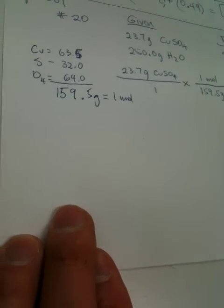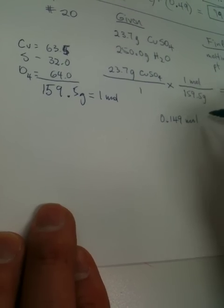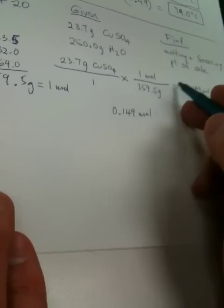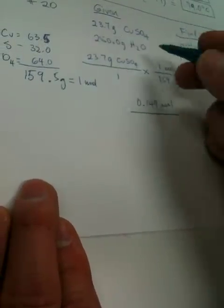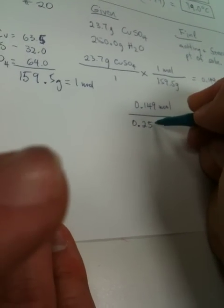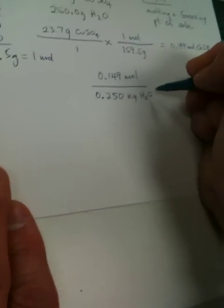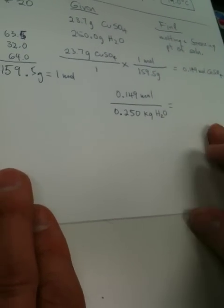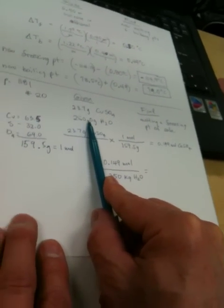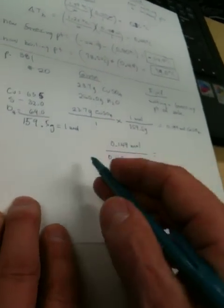Three to the left. So we've got 0.149 moles coming from this calculation. And on the bottom, we have this many grams of water, which we're changing into kilos by moving the decimal three to the left. And that's 250 kilos of water, which is our solvent. We need to change this to kilograms because molality is dealing with kilos of solvent. And the solvent is water.